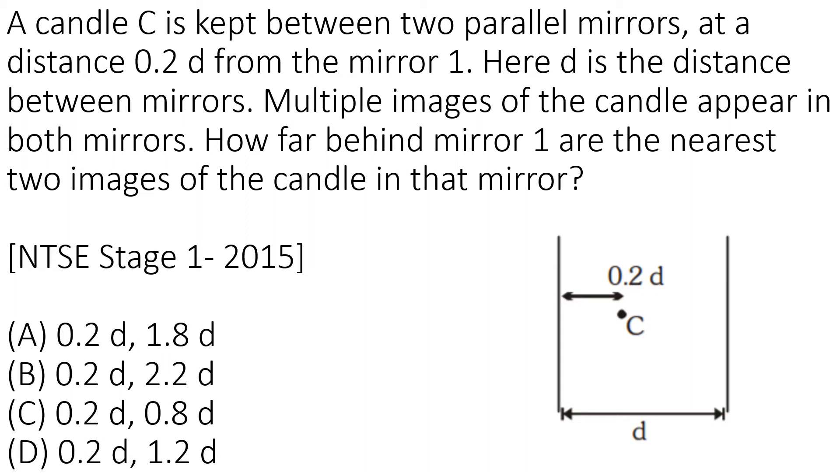The question is: a candle C is kept between two parallel mirrors at a distance of 0.2 D from mirror 1. Here, D is the distance between the two mirrors. Multiple images of the candle appear in both mirrors. How far behind mirror 1 are the nearest two images of the candle in that mirror?